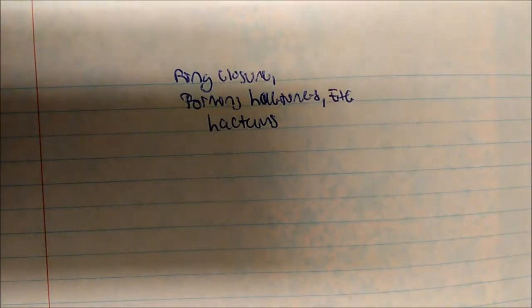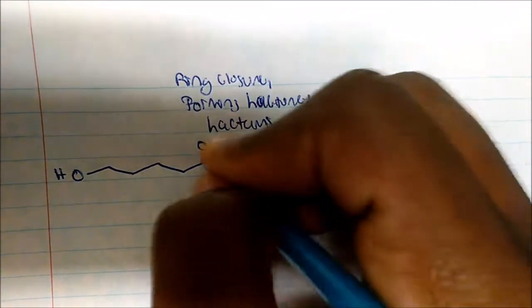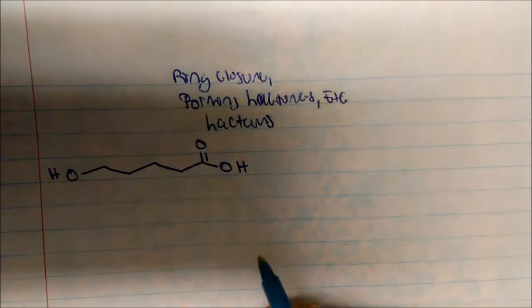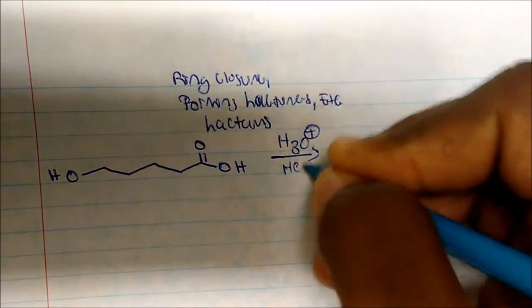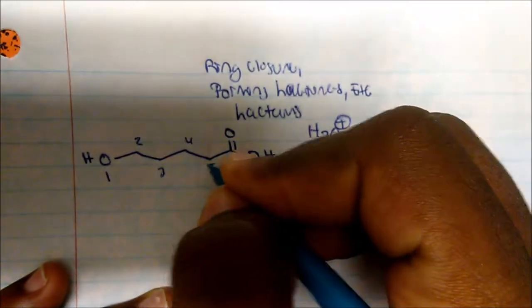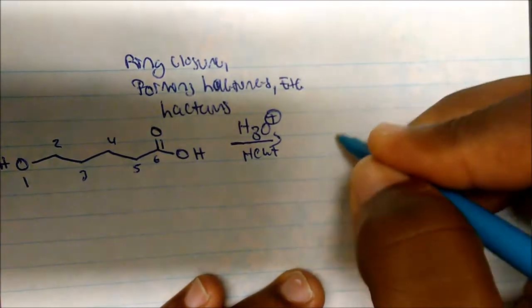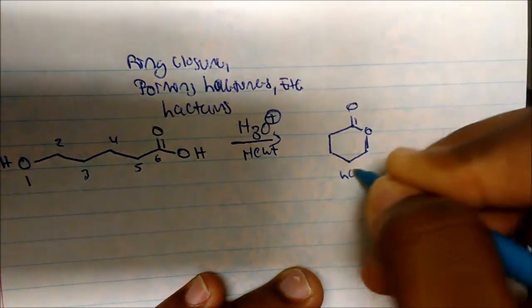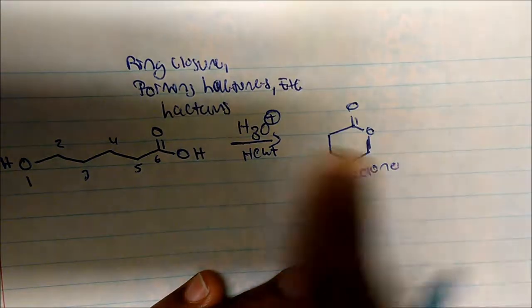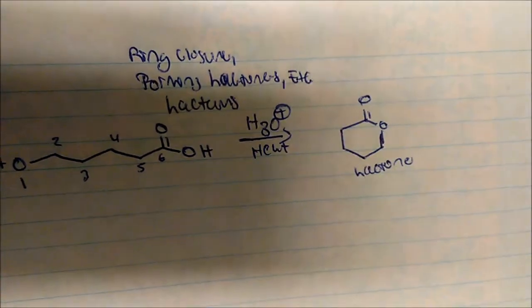In this video we'll talk about ring closure to form lactones and lactams. These are given with carboxylic acids and alcohols on the same chain. If we put this molecule in solution with acid and heat, we'll get ring closure. Counting the ring: one, two, three, four, five, six — we get a six-membered ring. This is your lactone; lactones are cyclic compounds in that general form.